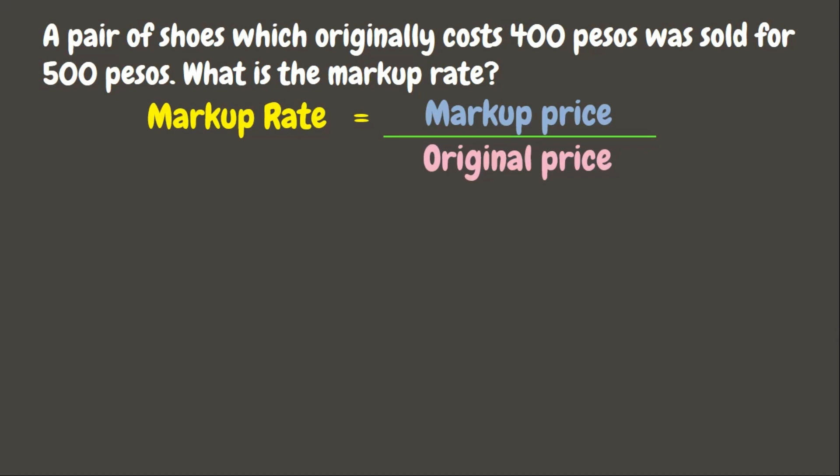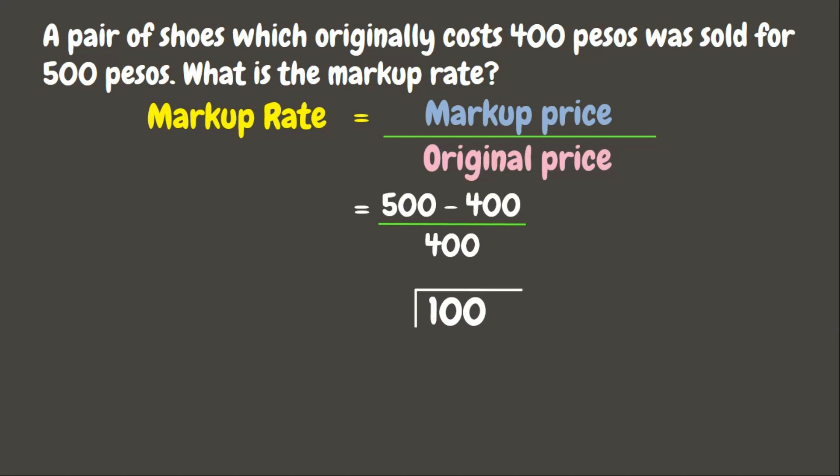We simply need to subtract the original price from the new price to get the markup price. The new price is 500 pesos while the original price is 400 pesos. That gives us 500 minus 400, over — or divided by — the original price, which is 400.